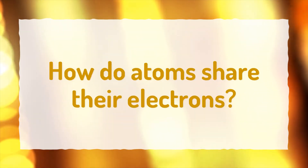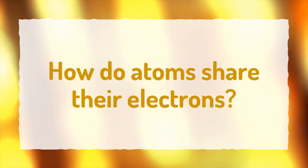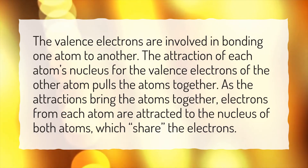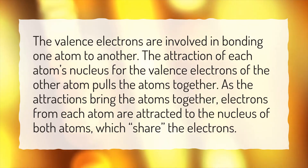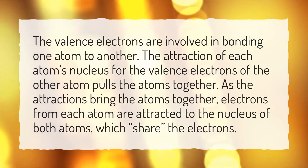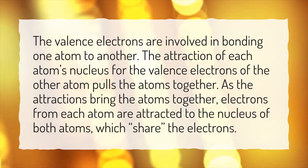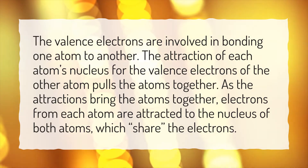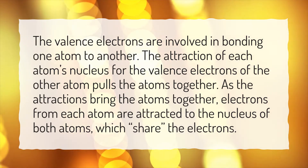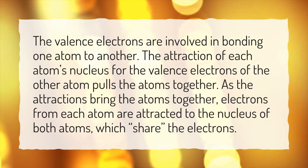How do atoms share their electrons? The valence electrons are involved in bonding one atom to another. The attraction of each atom's nucleus for the valence electrons of the other atom pulls the atoms together. As the attractions bring the atoms together, electrons from each atom are attracted to the nucleus of both atoms, which share the electrons.